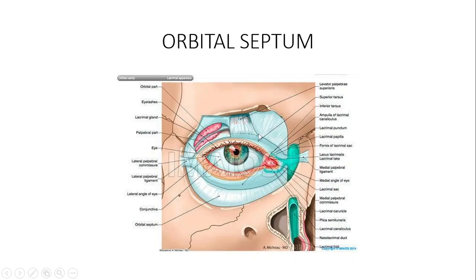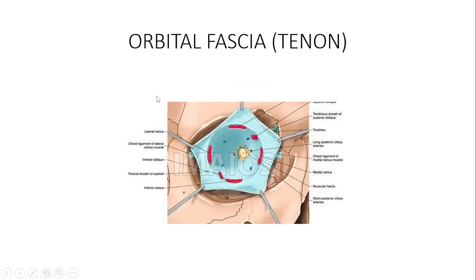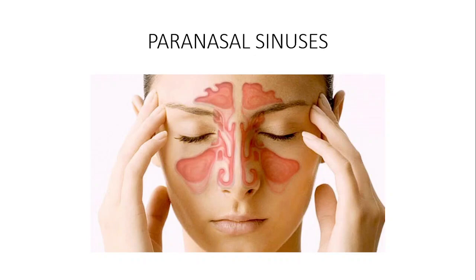In previous classes we discussed the orbital septum, that particular structure which prevents infection from entering into the orbit. The orbital septum is found within the eyelids. We also have the orbital fascia, also known as Tenon's capsule, which lines the interior portion of the orbit from the orbital margins.